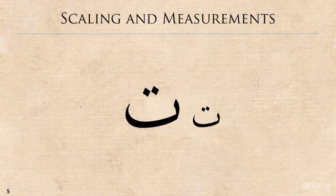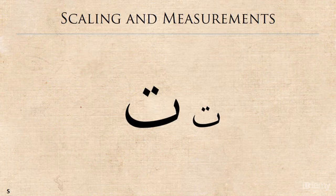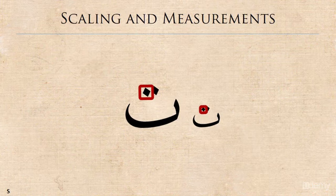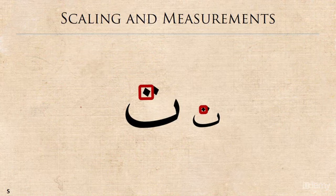Last but by no means the least, and really the topic of our next discussion, the last difference is the size difference between the Nuqtas of the two Tha. So as you can see, the smaller Tha has smaller Nuqtas and the larger Tha has larger Nuqtas.